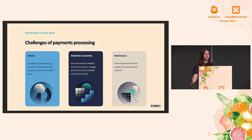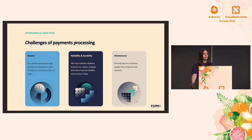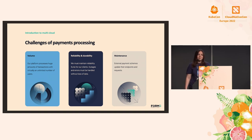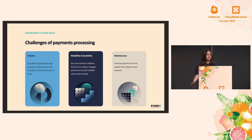A lot of the decisions we make when it comes to architecture and technologies come from the challenges we face in payments processing. First, we process a huge number of transactions — a large volume from virtually an unlimited number of users. Second, we have reliability and durability; we need to recover from outages without dropping or repeating transactions, because if we drop transactions, money disappears. Third, there is quite a bit of maintenance, as external payments infrastructures update their schemes and endpoints regularly.